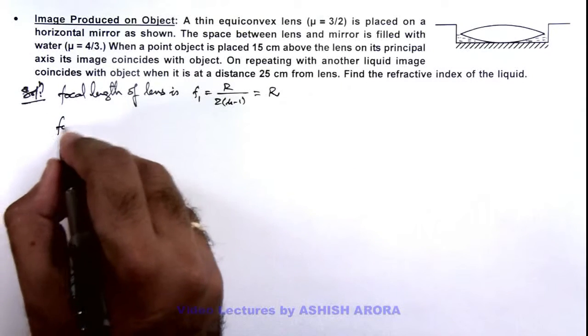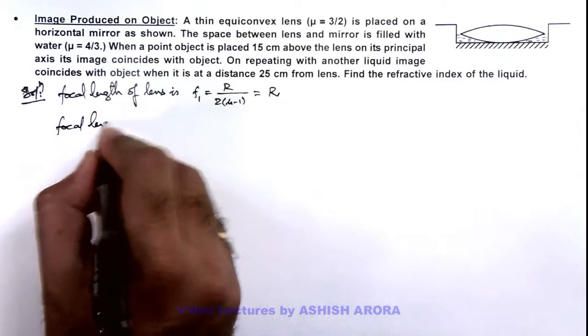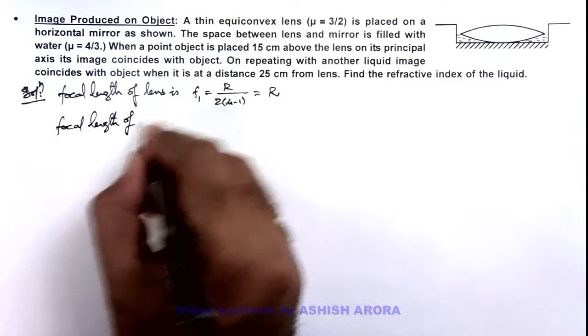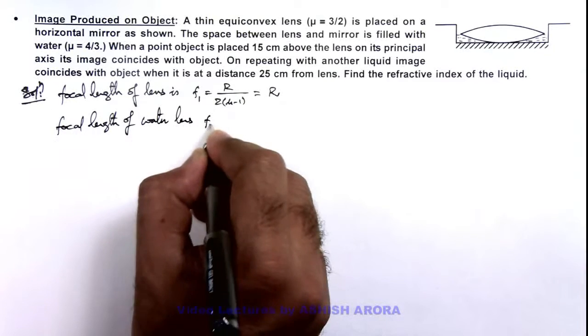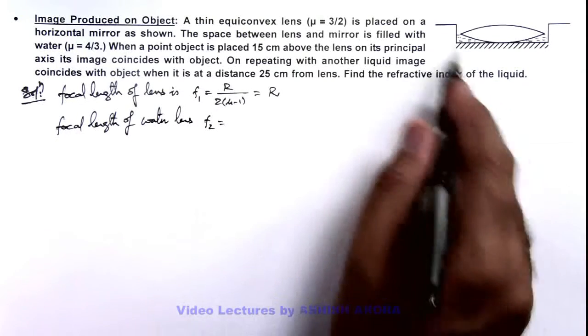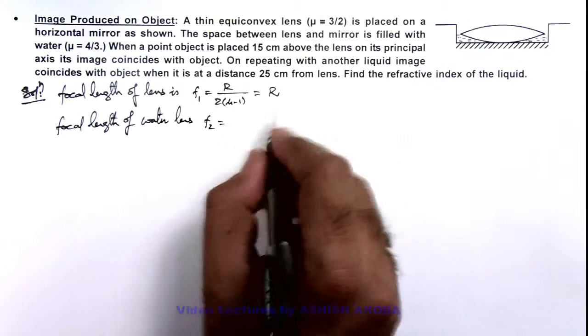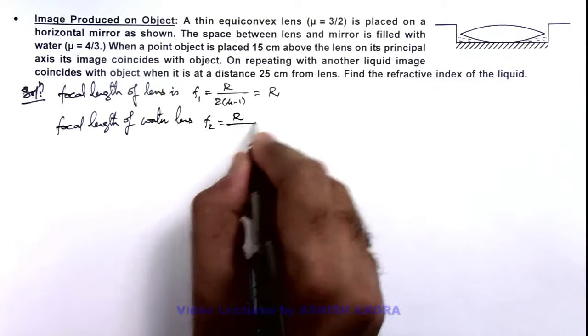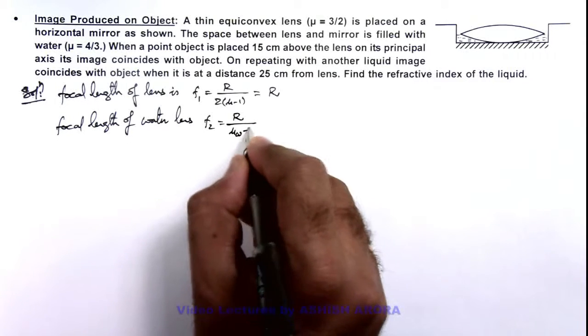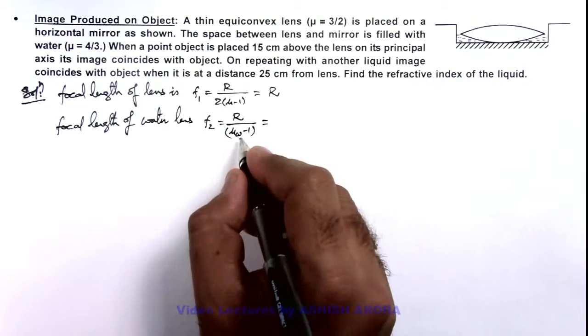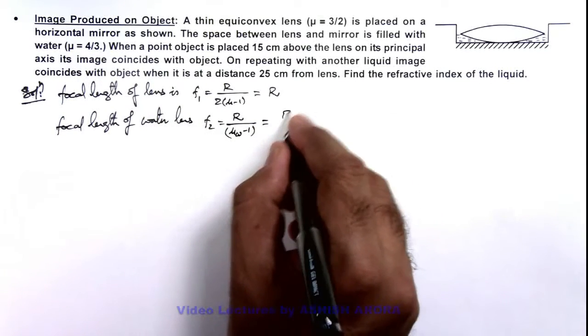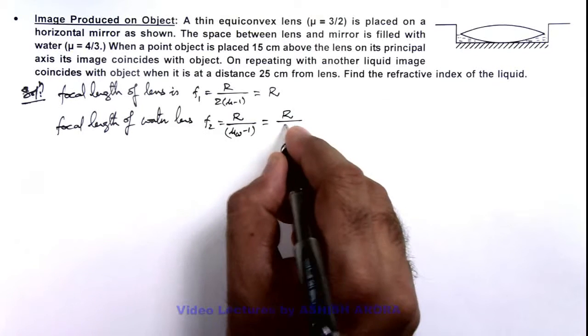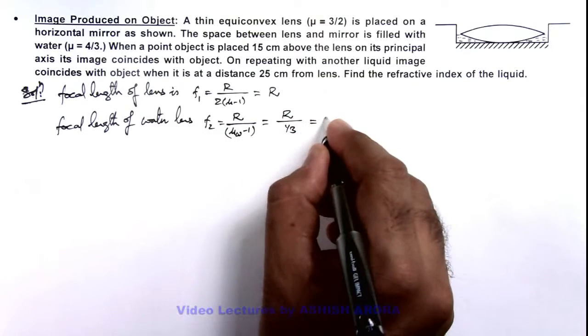And if we calculate the focal length of water lens, say this is f2, then this can be written as - as it is a plano-concave lens - this can be written as r by μ_water minus 1. And μ of water is given as 4/3, so here we can write as r upon 4/3 minus 1, that is 1/3. It is equal to 3r.